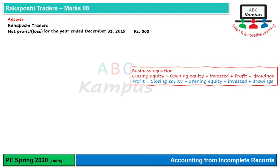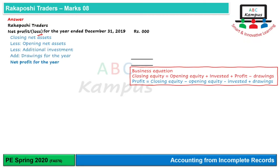Agar answer plus mein aaya to woh profit hoga, aur agar negative mein aaya to woh loss hoga. So the equation becomes: Net Profit = Closing net assets − Opening net assets − Additional investment + Drawings. Humein closing net assets, opening net assets, additional investment, aur drawings chahiye.